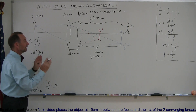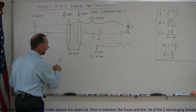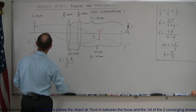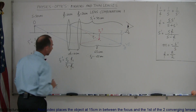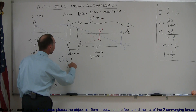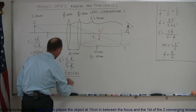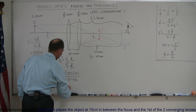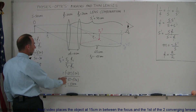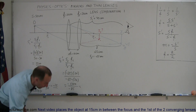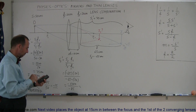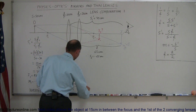Now we use the same equation for the second lens. S2 prime equals S2 times F2 divided by S2 minus F2. Plugging in: S2 is minus 65, F2 is 20 centimeters, so this equals minus 65 times 20 divided by minus 65 minus 20. That is minus 1300 divided by minus 85. Using a calculator, 1300 divided by 85 gives a positive 15.3 centimeters.